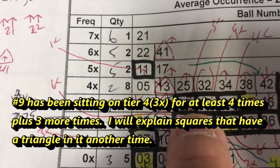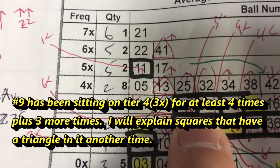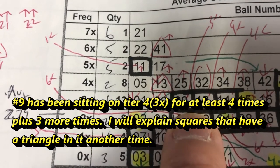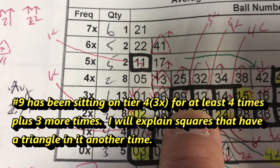That was on tier four, 3x, and that was a square box with a 3x, so it just came down.